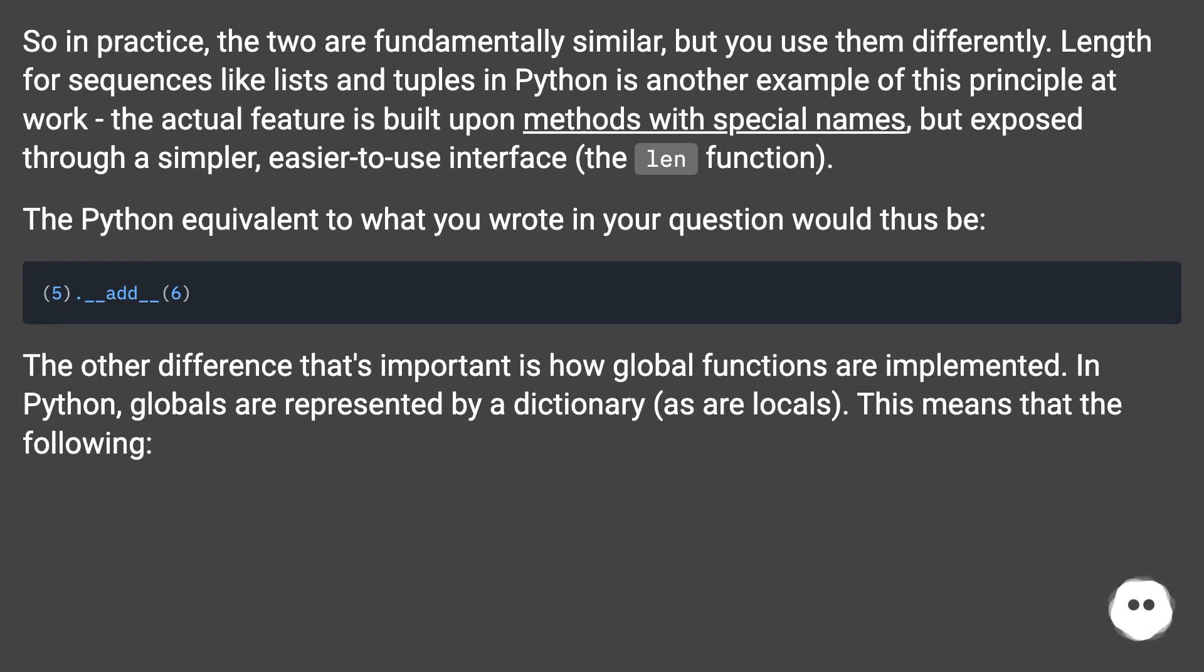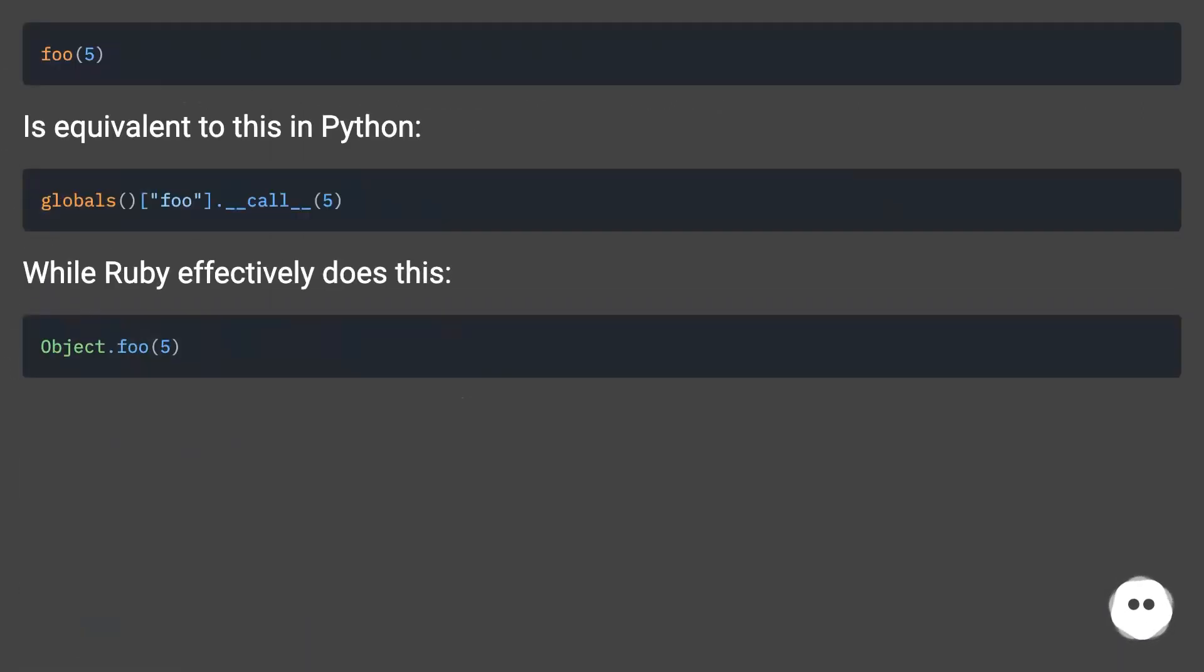The Python equivalent to what you wrote in your question would thus be... The other difference that's important is how global functions are implemented. In Python, globals are represented by a dictionary, as are locals. This means that the following is equivalent to this in Python, while Ruby effectively does this.